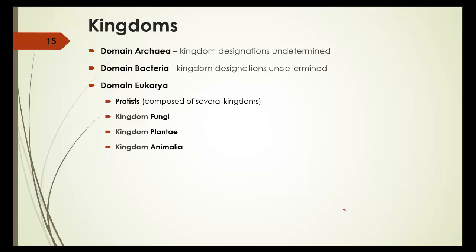Archaea and bacteria have kingdoms that are undetermined at this point. Eukarya have protus, which breaks down even further, fungi, plantae, and amelia.